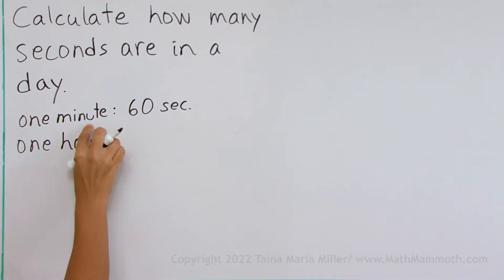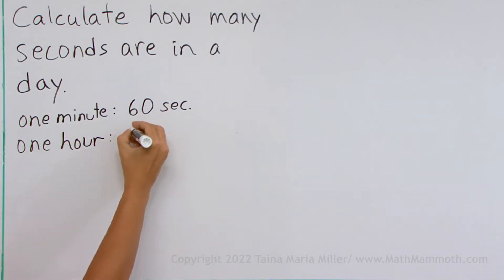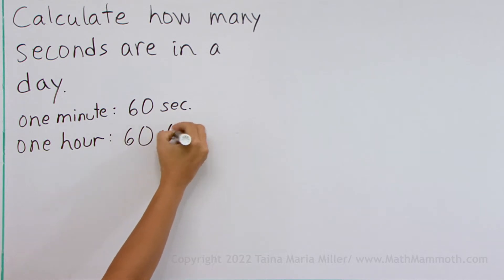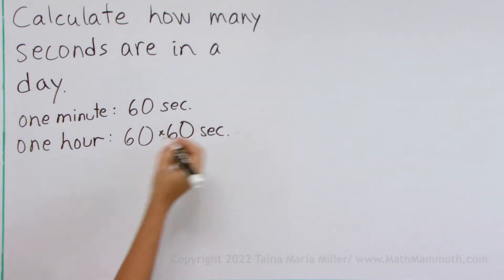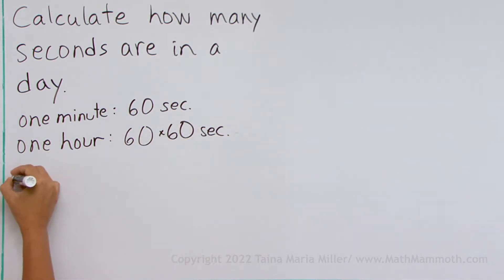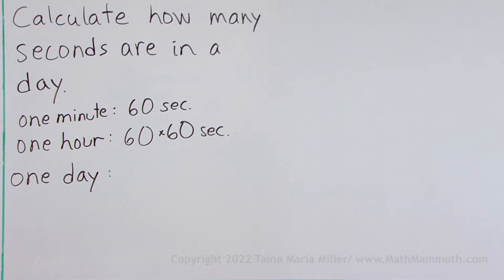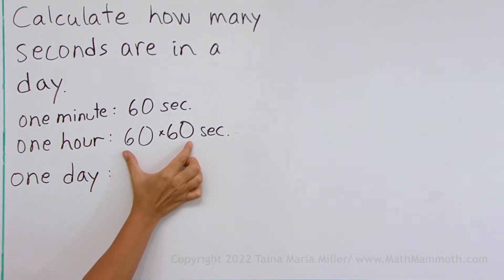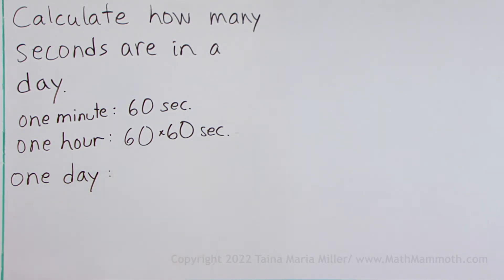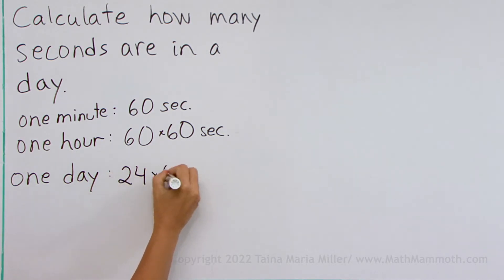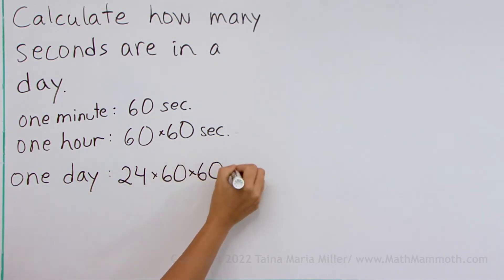So one hour is 60 times 60 seconds. Now for one day, we need to figure out what to multiply. If in one hour we have that many seconds, then in one day we have 24 times that — so we get 24 times 60 times 60 seconds.